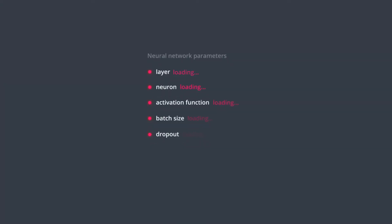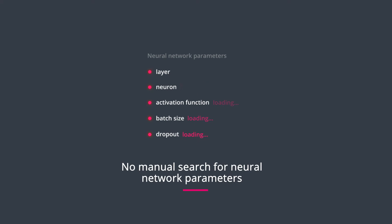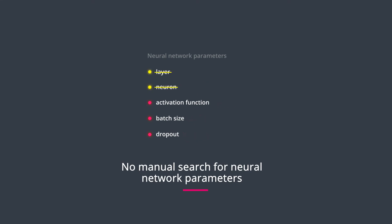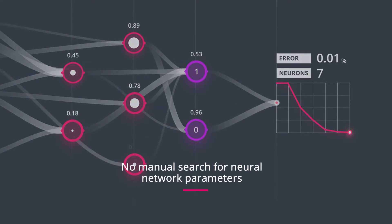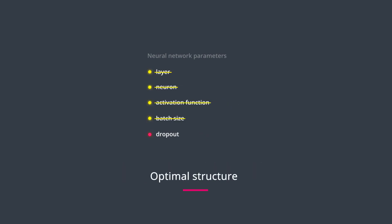Newton eliminates the time-consuming multidimensional manual search for network parameters, including number of layers, neurons, type of activation function, batch size, dropout, and learning rate, and more efficiently finds the optimal structure.